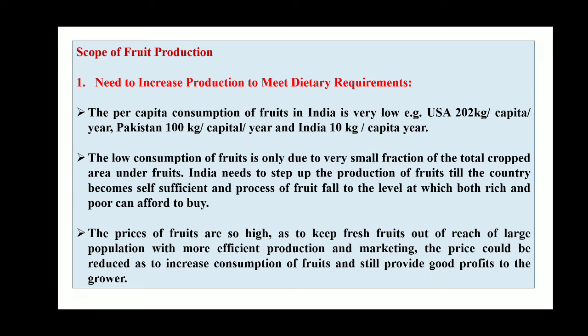Now, the scope of fruit production. We have seen the importance; let us see the scope specifically for fruit crops. The need for increased production to meet dietary requirements is significant, as per capita consumption of fruits in India is very low — USA consumes 202 kg per capita per year, Pakistan 100 kg, while India has only 10 kg of fruit consumption per capita per year.